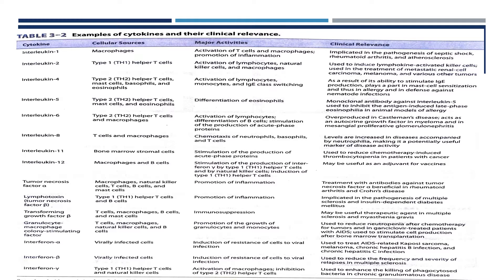These are commonly asked in MCQ format, so you should know the cellular source, their activities or actions, and the clinical relevance. For example, interleukin-1 is implicated in the pathogenesis of septic shock, rheumatoid arthritis, and atherosclerosis. Tumor necrosis factors are two types: TNF-alpha and TNF-beta. TNF-alpha is produced by macrophages and TNF-beta by T-helper-1 cells, and they help in promotion of inflammation.